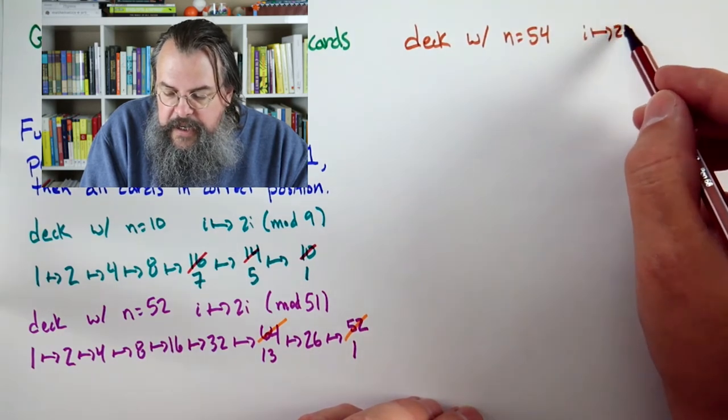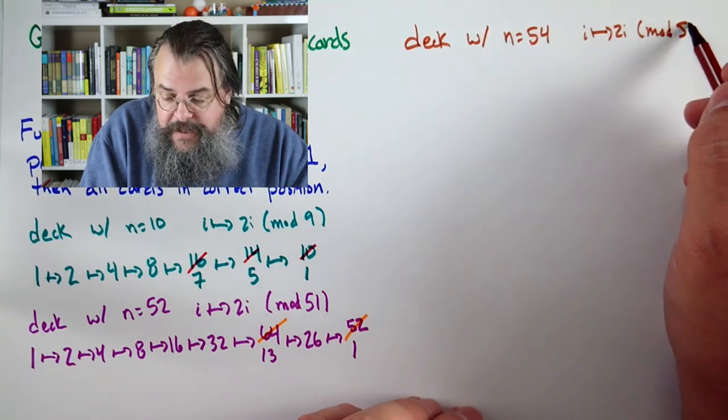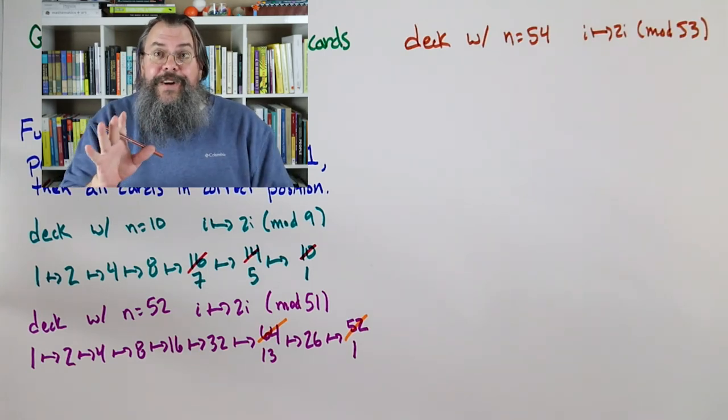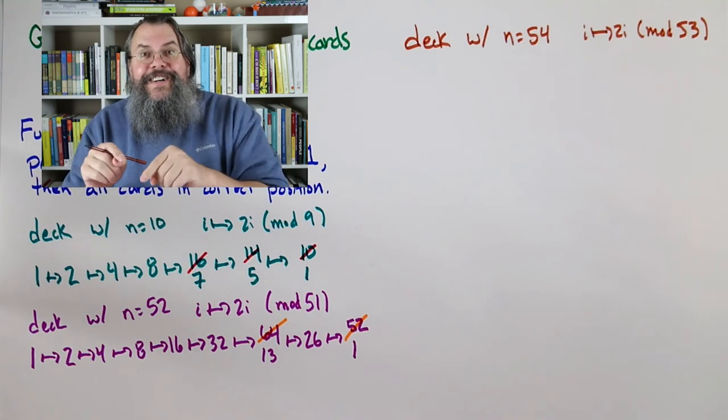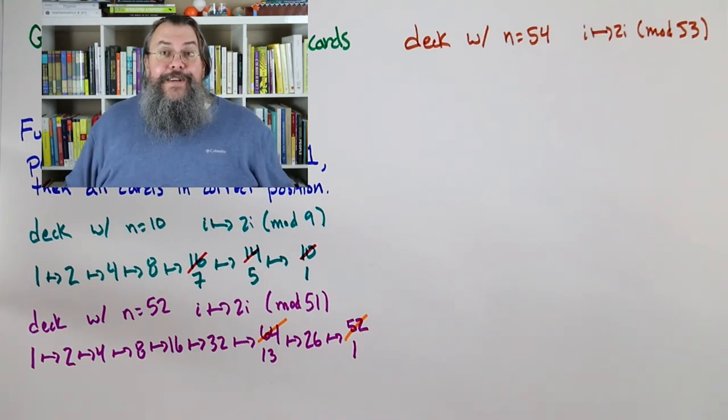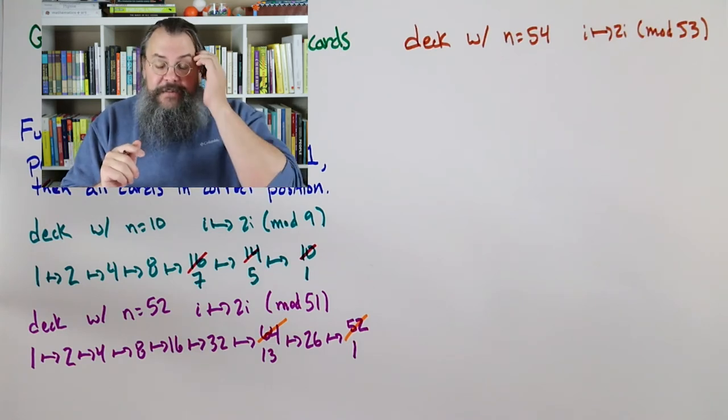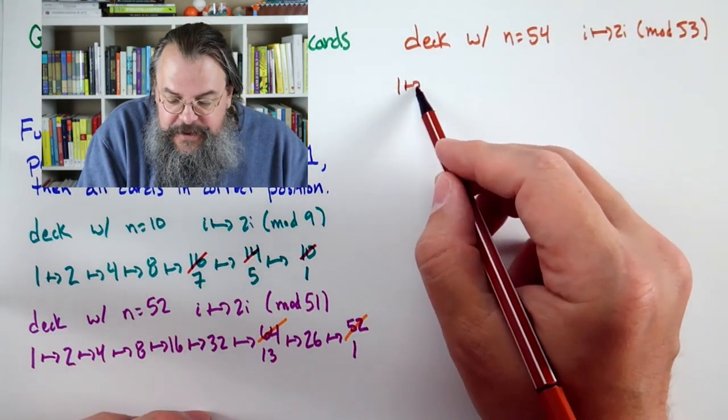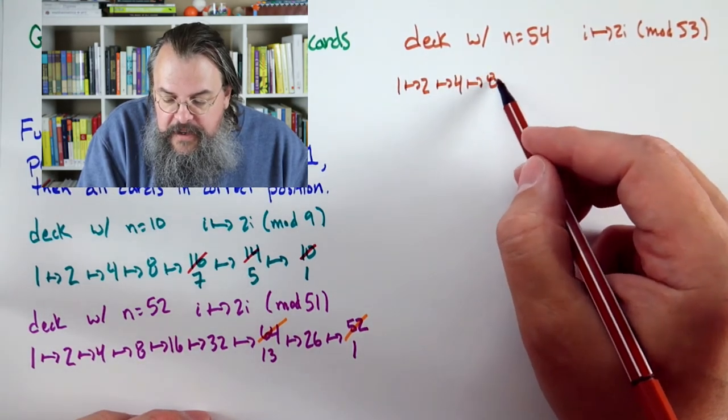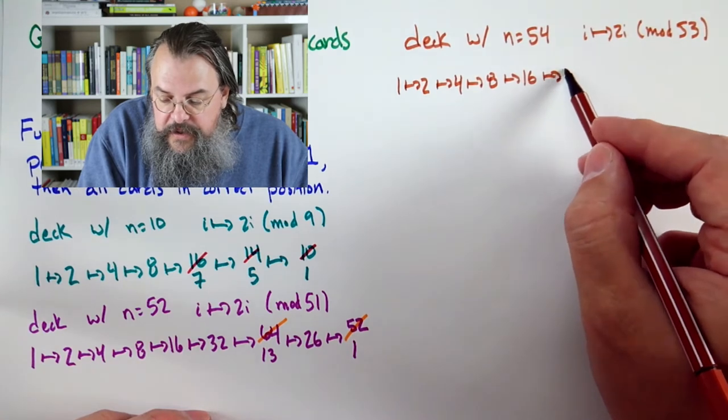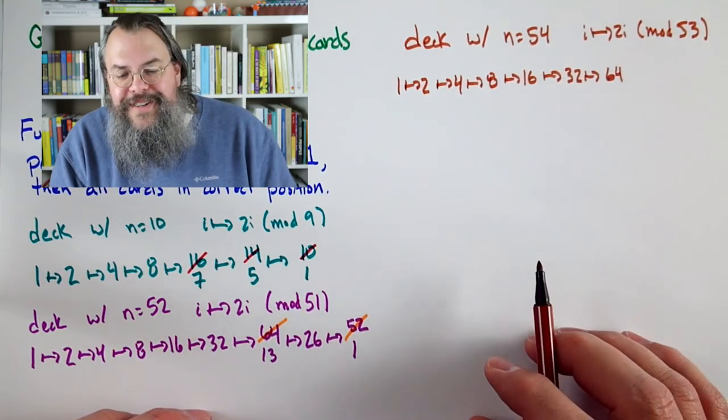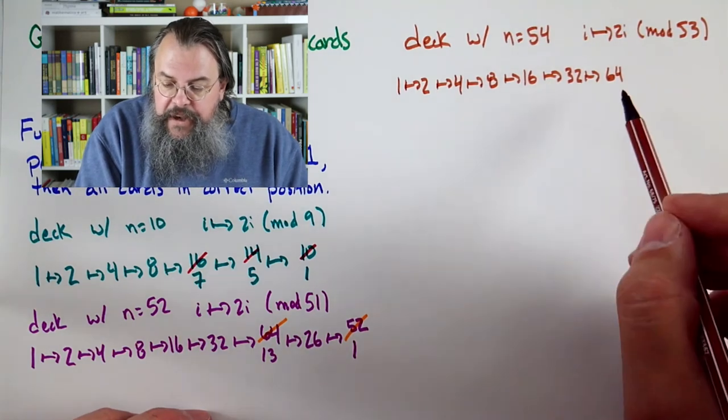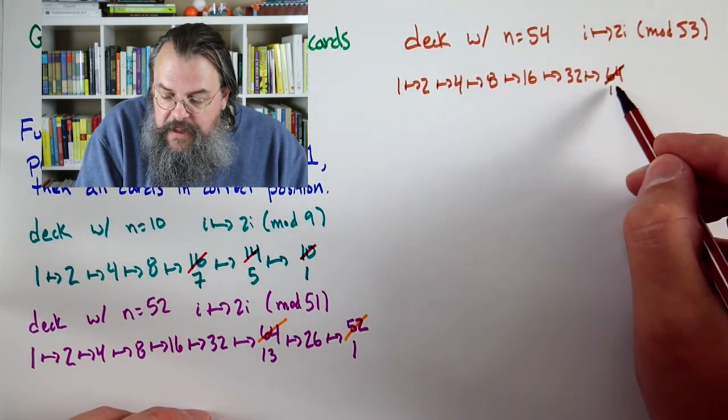So what we can do is keep track of what's happening. Let's suppose we have a deck with n equals 10. 10 cards. So in other words we're going to have i maps to 2i, and we're going to do it mod 9. So we just follow the card 1. What's the rule? Every time we double, and then we check the number. If it's bigger than 9, subtract 9. That's it. And we keep doing that until we get back to 1.